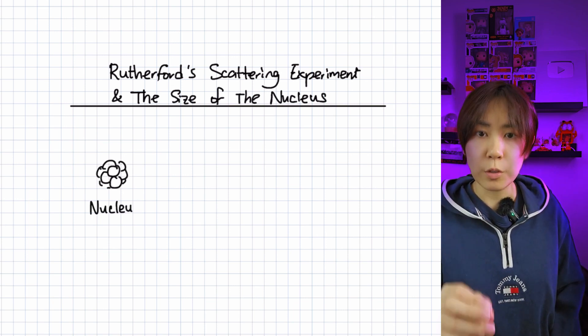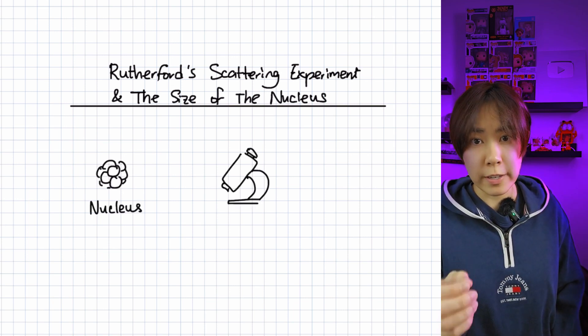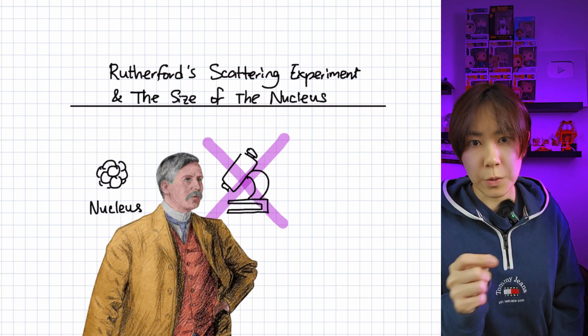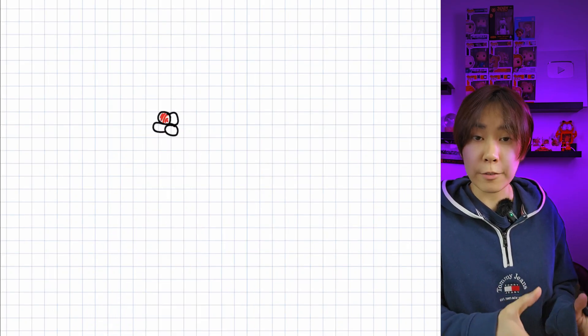Physicists discovered the atom's nucleus without actually seeing it under a microscope. It was in 1911, Ernest Rutherford conducted the alpha scattering experiment.